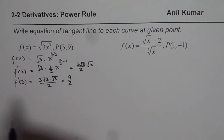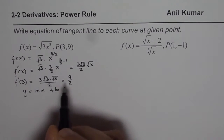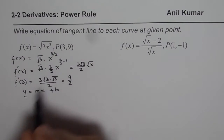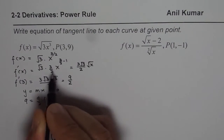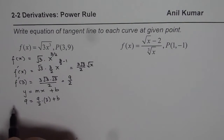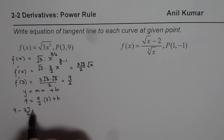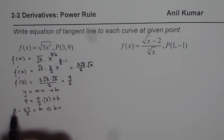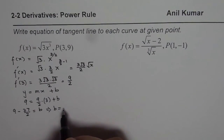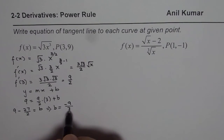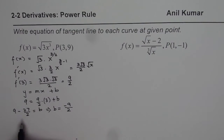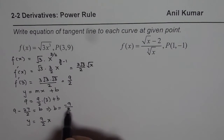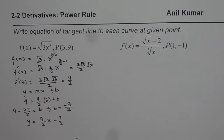Since you know the slope, you can find the equation of the tangent line using y = mx + b. The slope is 9/2, so substitute m = 9/2. The point has x = 3 and y = 9, so we write: 9 = (9/2)(3) + b. That gives 9 - 27/2 = b, or 18/2 - 27/2, which is -9/2. So b = -9/2. Substituting, the equation of the tangent line is y = (9/2)x - 9/2.